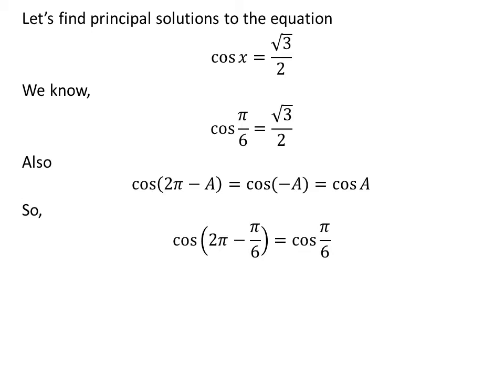Application of the above identity implies that cosine of 2 times pi minus pi upon 6 is equal to square root of 3 upon 2. As 2 times pi minus pi upon 6 is equal to 11 times pi upon 6, so cosine of 11 times pi upon 6 is equal to square root of 3 upon 2.